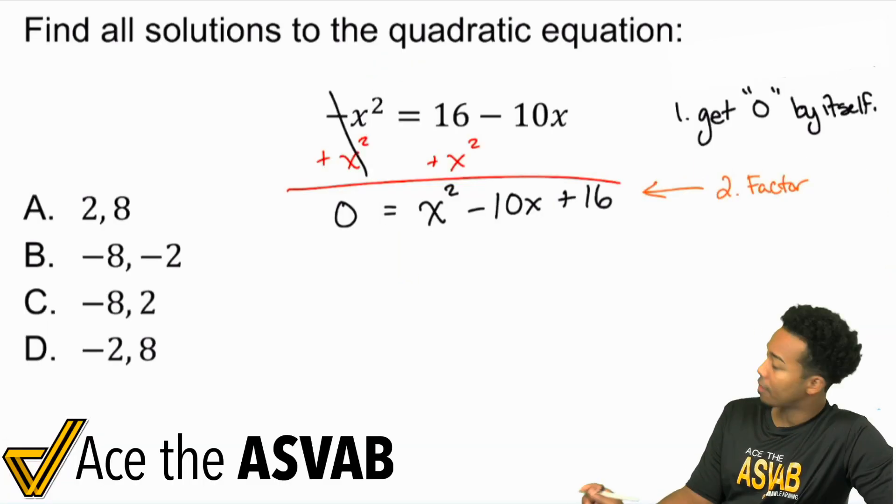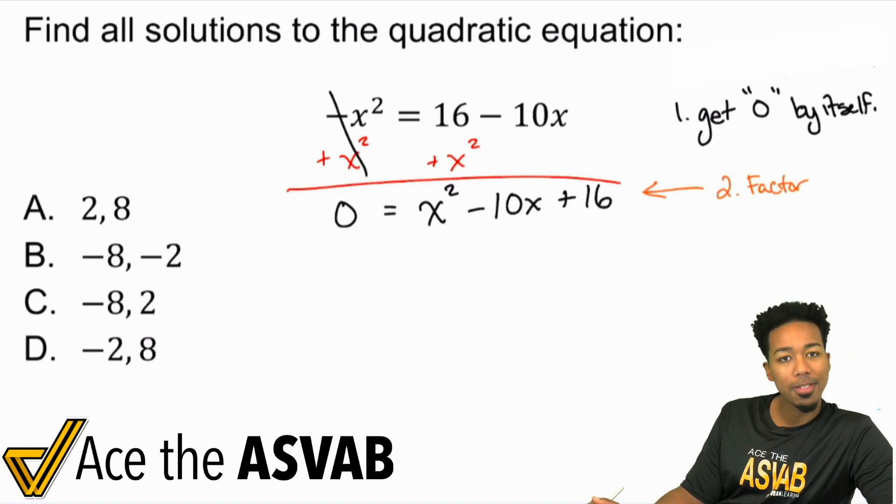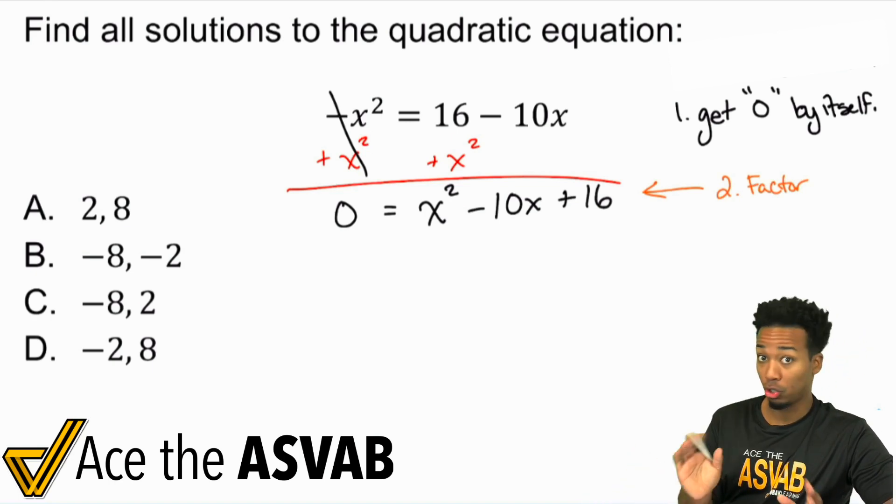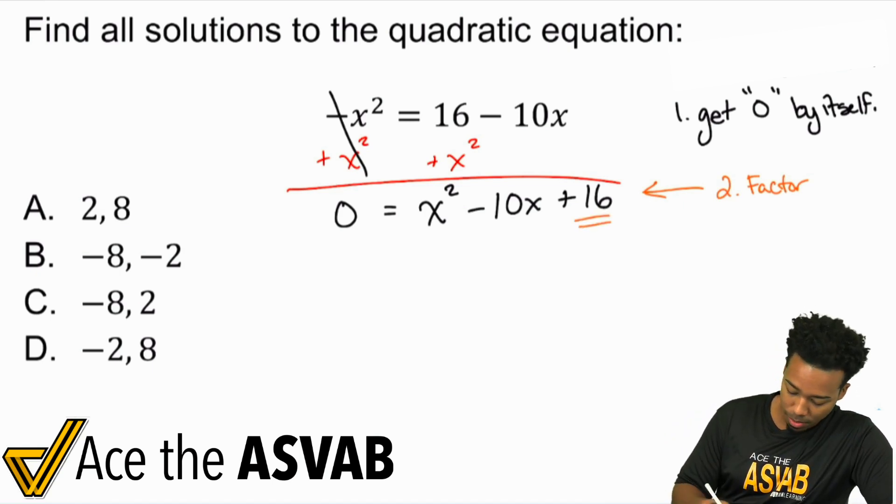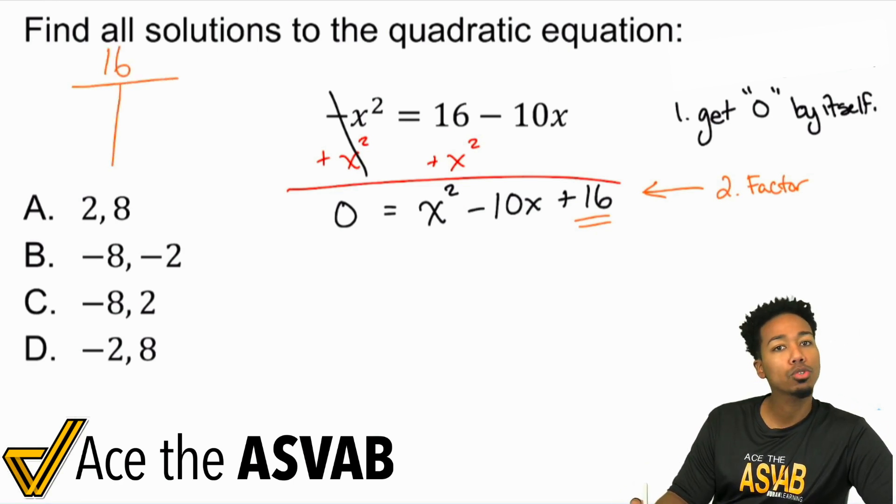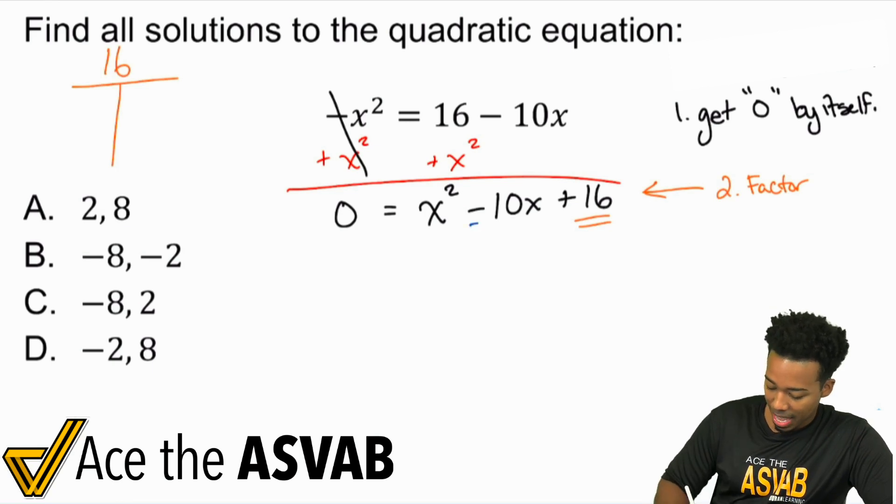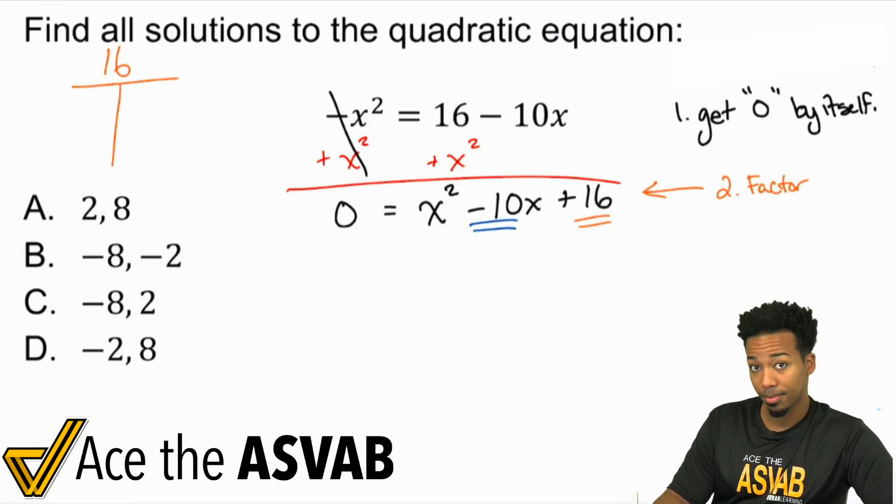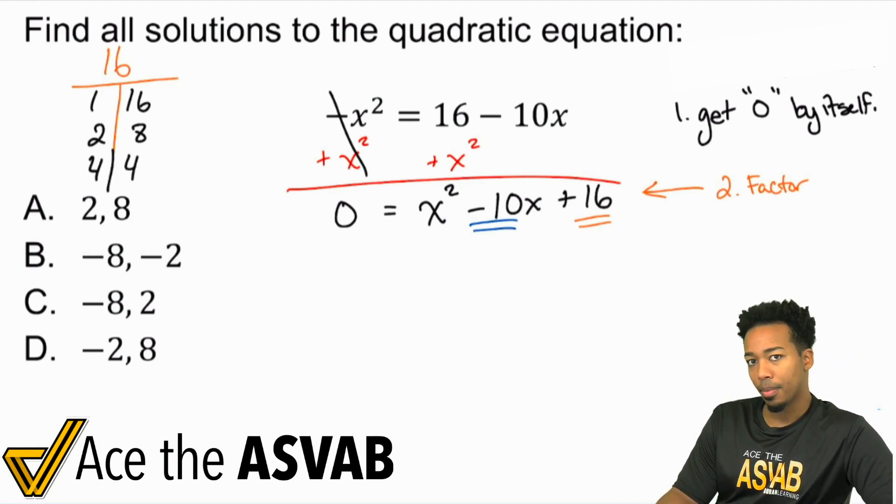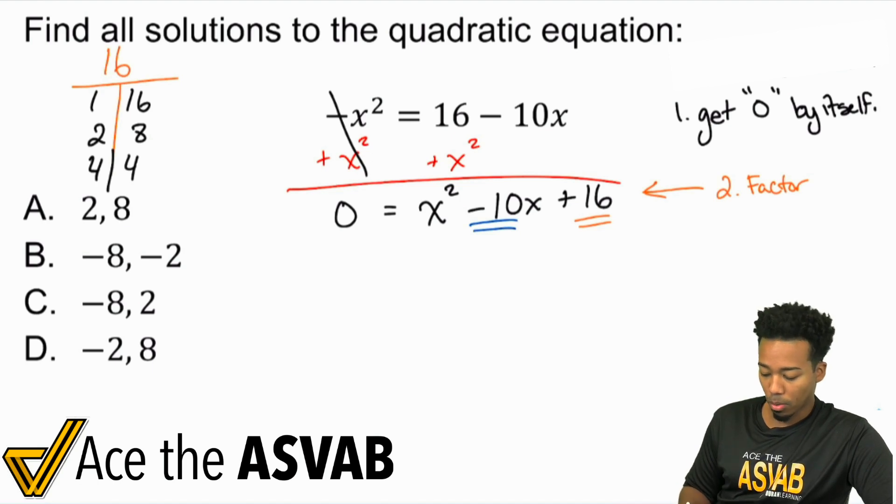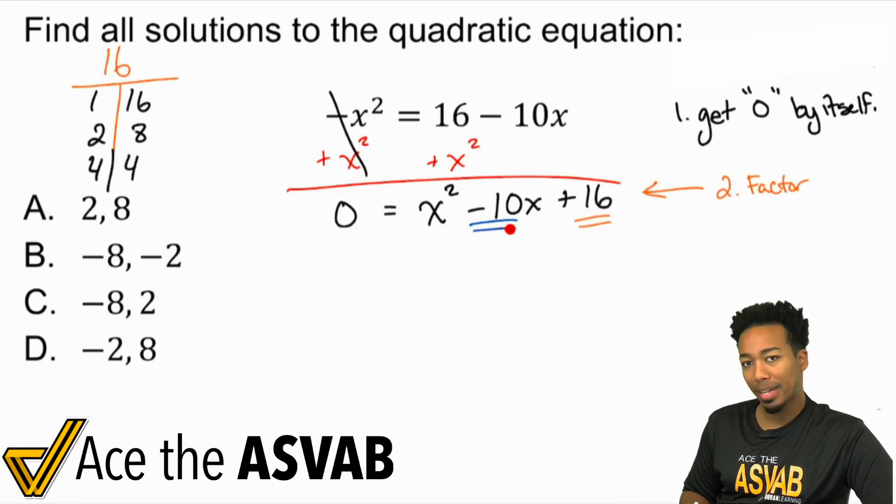So we have x squared minus 10x plus 16. The way that this works when your x squared is just x squared, not like a 2x squared or 5x squared, when it's just x squared, what you do is you take your last number, your 16, and you're going to find the factors of 16. Because what you're looking for is the factors of 16 that add up to negative 10. So let's get to work here. We know that we can have 1 times 16, we can have 2 times 8, and we have 4 times 4. So look at what you got here. We're asking: what numbers multiply to 16 but add up to negative 10?